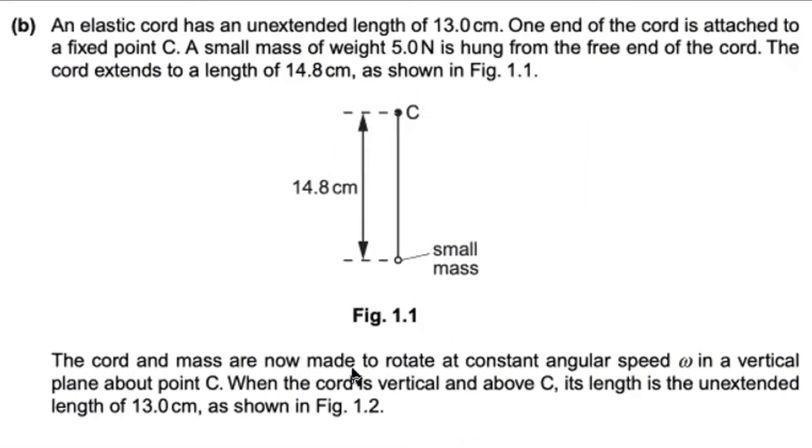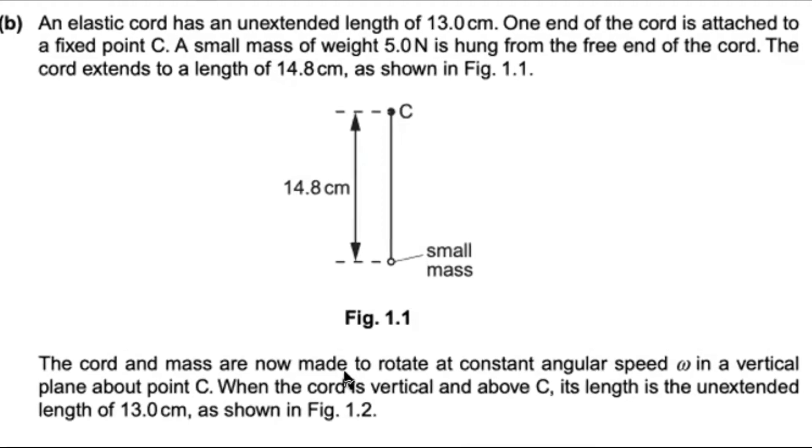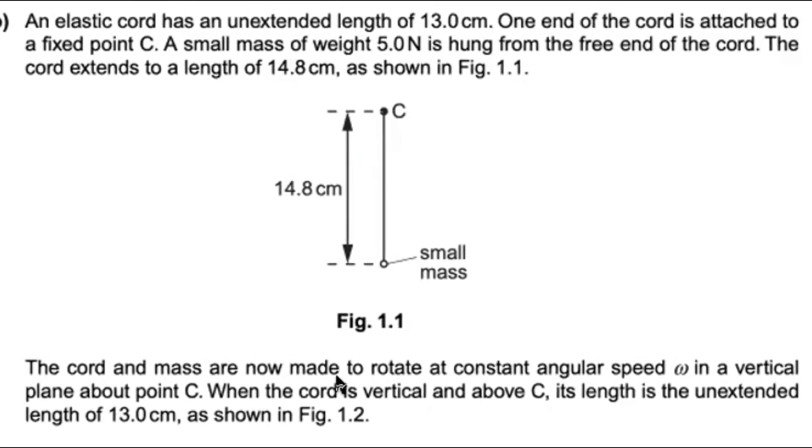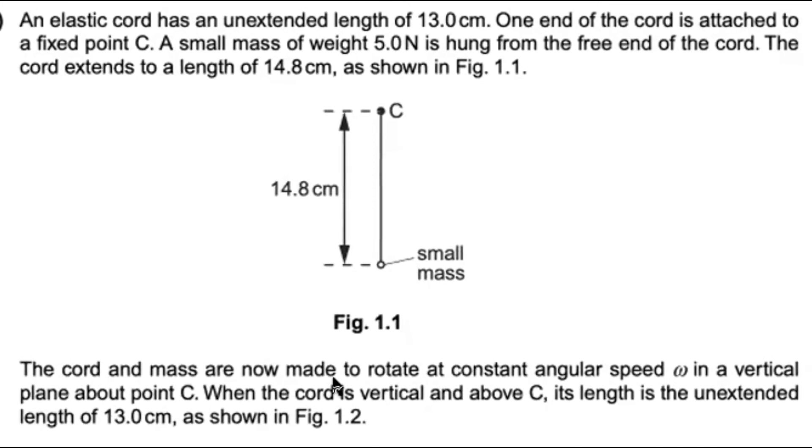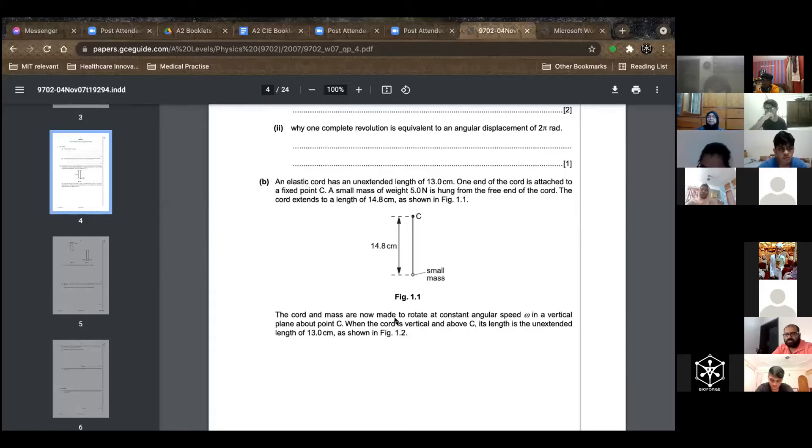An elastic cord of un-extended length 13 centimeters, one end attached to a fixed point C. A small mass of weight 5 Newtons is hung from the free end. The cord extends to 14.8 centimeters as shown in figure 1.1. The cord and mass are now made to rotate at constant angular speed omega in a vertical plane about point C. When the cord is vertical at and above C, the length is un-extended at 13 centimeters.